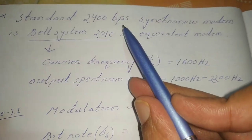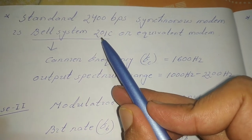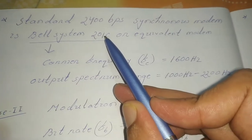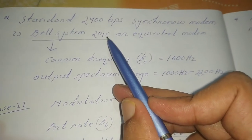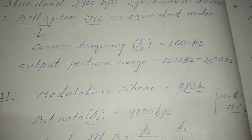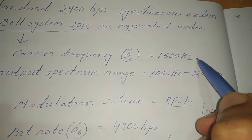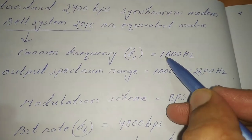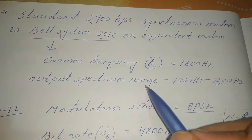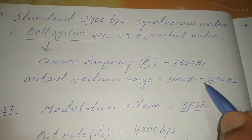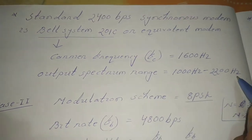The standard 2400 bps synchronous modem developed by Bell System is called Bell System 201C. Its carrier frequency fc is 1600 Hz, and the output spectrum range is between 1000 Hz and 2200 Hz.